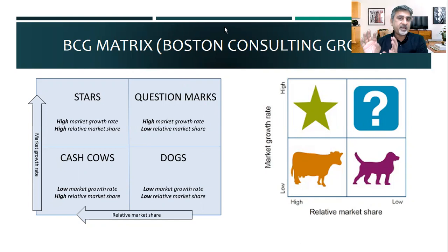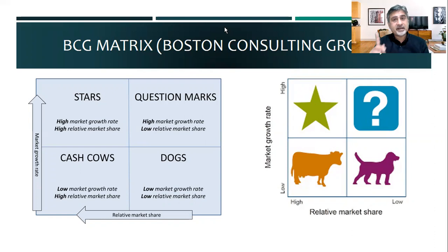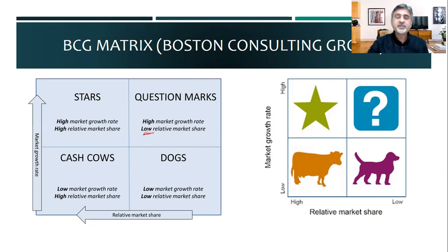If you have star products, you have to take care of them. Market is growing and your market share is more — you need to maintain your competitiveness and invest a lot in that star space. Products in the dog or cash cow category get less investment. For question marks, market growth is high but your share is less — you need to see if you can grab that market by building strategic capability and converting your low market share to high.